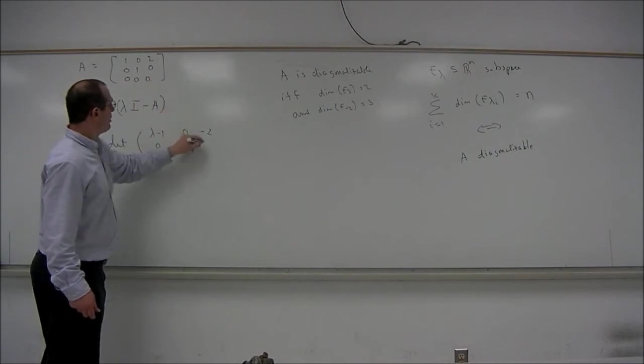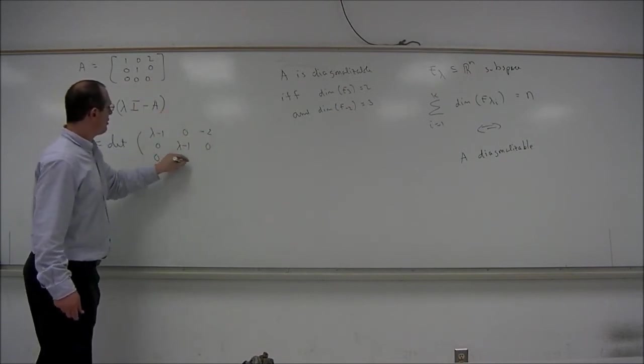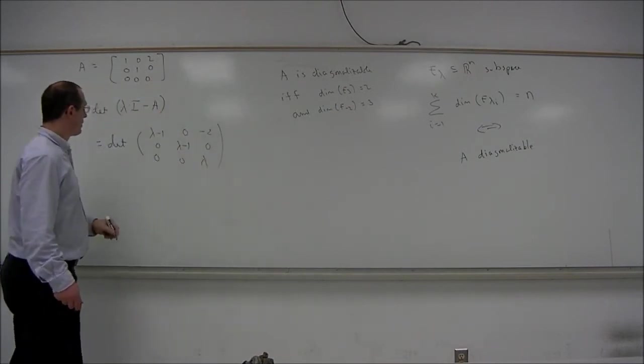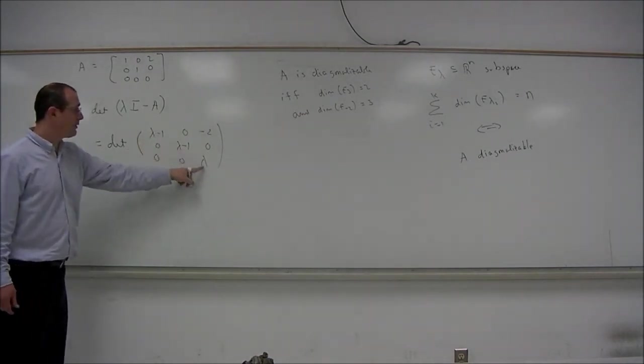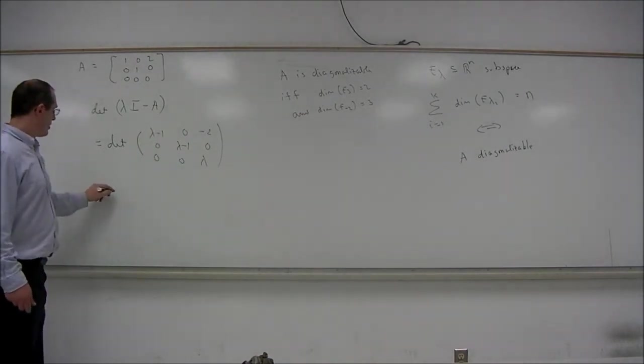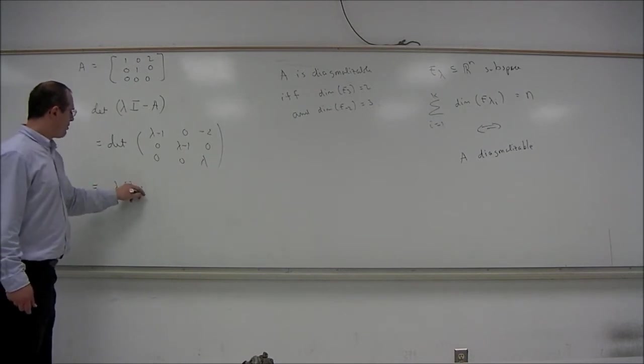0, lambda minus 1, 0, 0, 0, lambda. The determinant of this upper triangular matrix is the product of the diagonal entries. So this is lambda times lambda minus 1 squared.